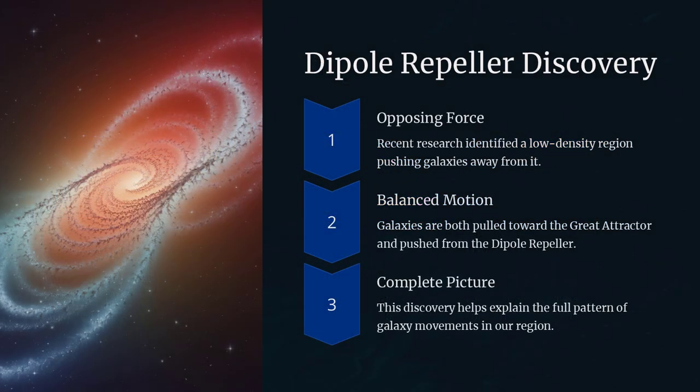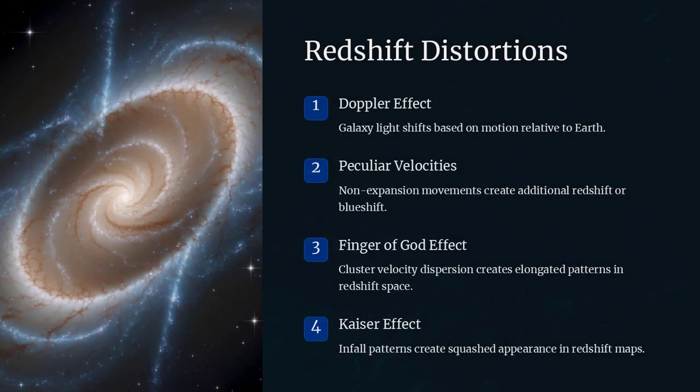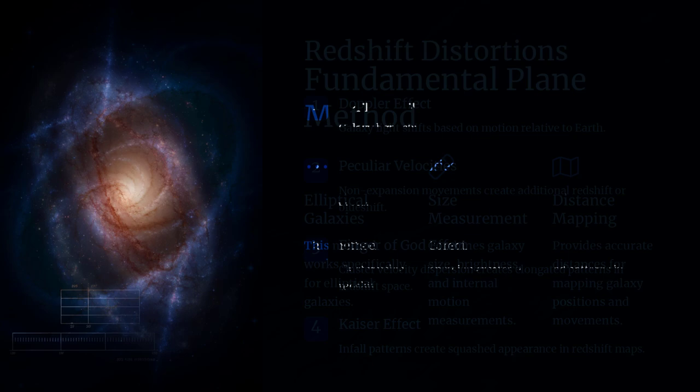For example, surveys such as the 2 Micron All-Sky Survey, 2MASS, have helped map the distribution of galaxies in the vicinity of the Great Attractor, revealing that this region may be even more complex than initially thought.